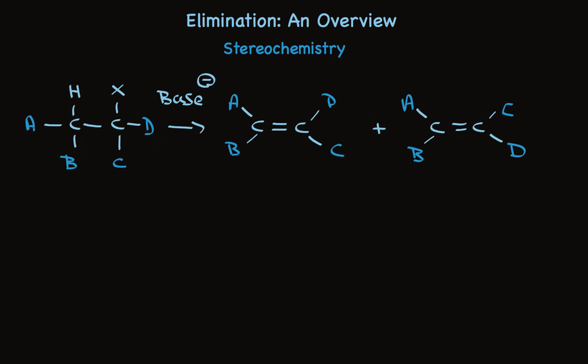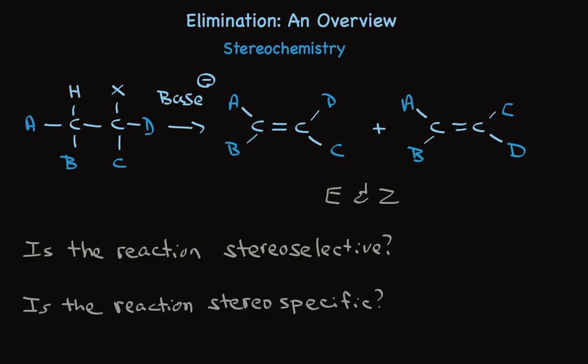And then there's the question about stereochemistry. In many cases, because A, B, C, and D aren't the same things, both E and Z stereoisomers can be formed. So then we have two questions. Is the reaction stereoselective? And is the reaction stereospecific? In most cases, the reaction will favor formation of one of these stereoisomers over the other. And the answer to the second question is, sometimes.